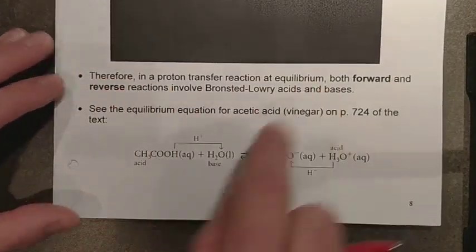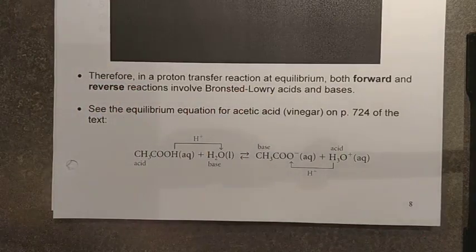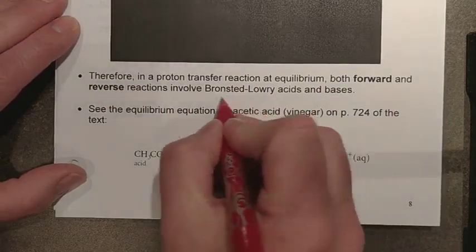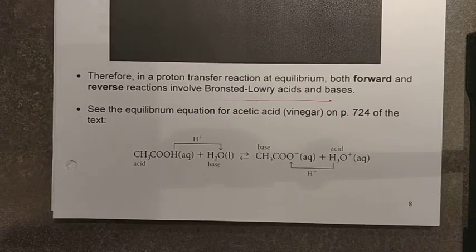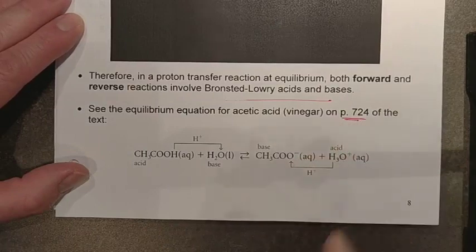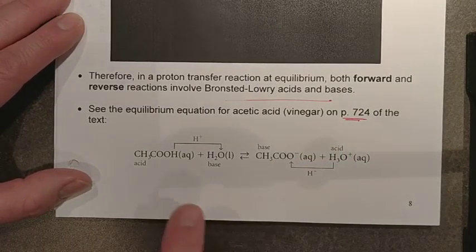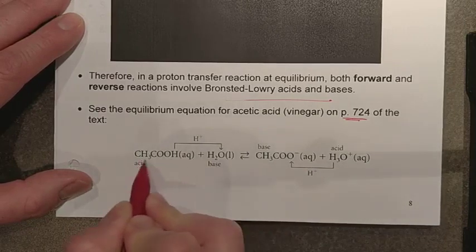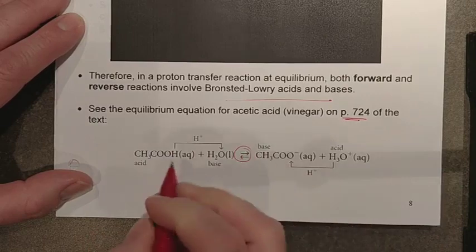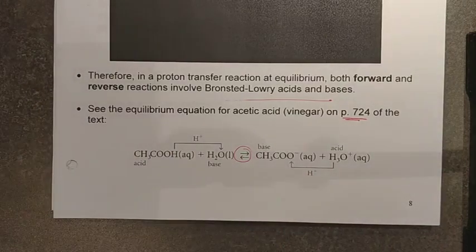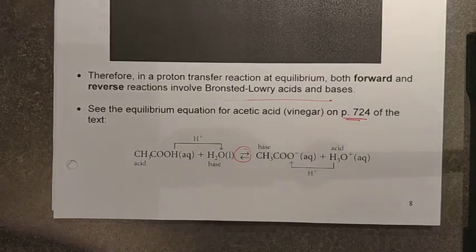Once you've watched that video, come back here. In a proton transfer reaction, with the exception of strong acids, there will be a forward and reverse reaction involving Bronsted-Lowry acids and bases. Take a look at the vinegar reaction — I'm going to take acetic acid and dump it into some water to make a low-pH acidic solution. This is covered in the text on page 724. Acetic acid exists in equilibrium because it is a weak acid, which means it does not ionize completely with water — only some of it reacts to produce the hydronium that gives us a low pH.